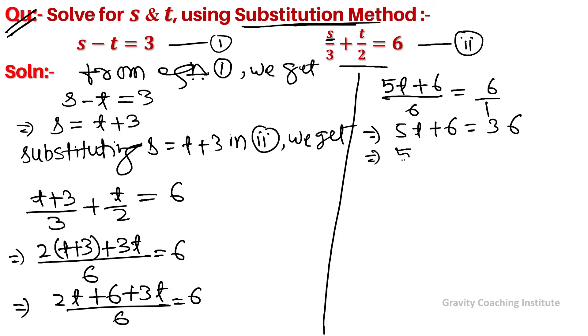So 5t + 6 = 36, which means 5t = 30, therefore t = 30/5 = 6.